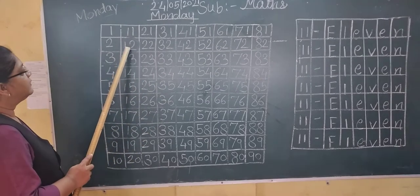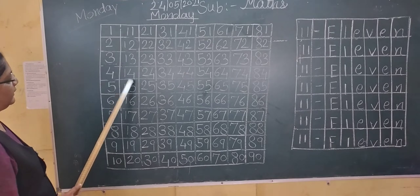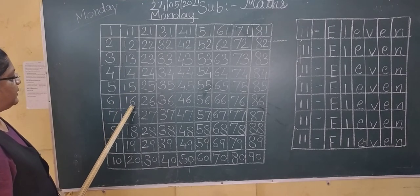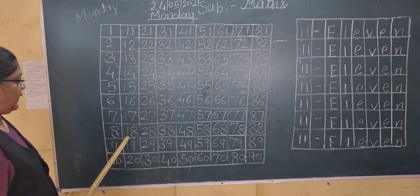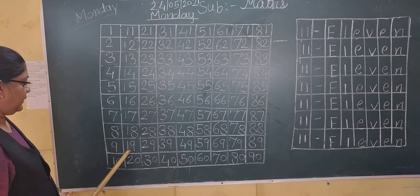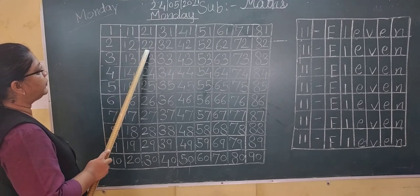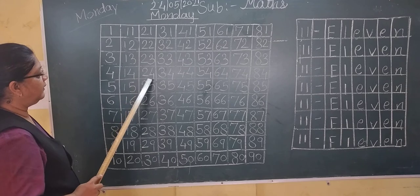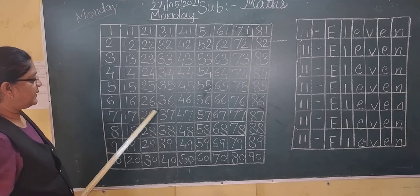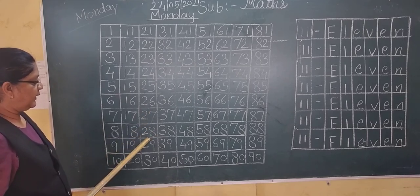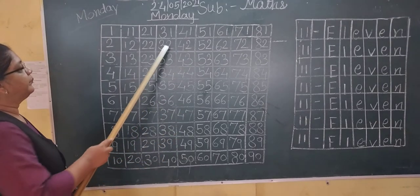Now: eleven, twelve, thirteen, fourteen, fifteen, sixteen, seventeen, eighteen, nineteen, twenty, twenty-one, twenty-two, twenty-three, twenty-four, twenty-six, twenty-seven, twenty-eight, twenty-nine, thirty, thirty-one.